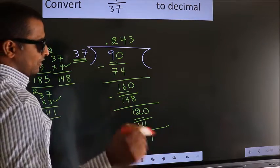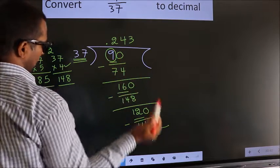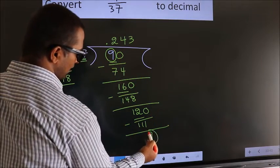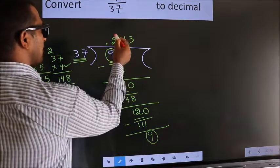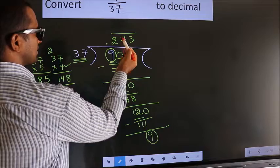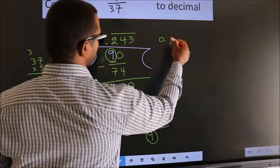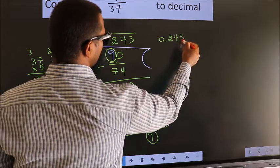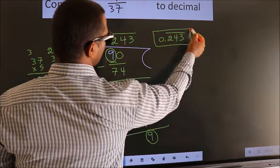Now, here you observe. Earlier, we had 9. And we got 9. And we got 9 again. That means we get bar on these 3 numbers. Therefore, our answer is 0.243 with bar on these 3 numbers. This is our answer.